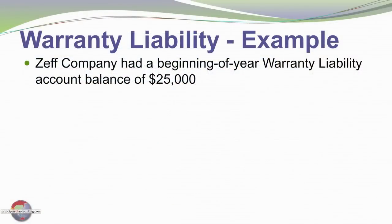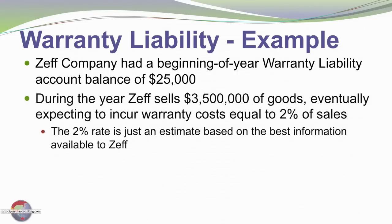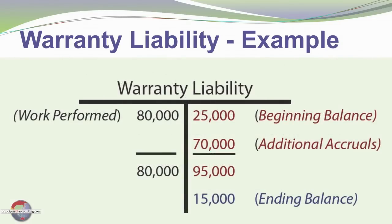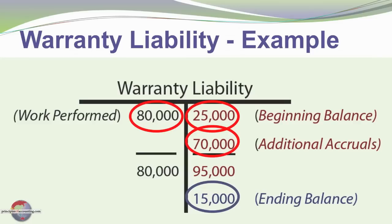Here's an example. Zeff Company had a beginning-of-the-year warranty liability account balance of $25,000. During the year, Zeff sold $3,500,000 of goods and estimated warranty costs equal to 2% of sales. They actually did $80,000 of warranty work during the year. Looking at a T-account: the $25,000 beginning balance plus the 2% of sales accrual of $70,000 gives $95,000 in credits. The $80,000 debit for warranty work performed leaves a $15,000 ending balance for the estimated remaining liability.